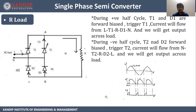Next topic is single phase semi-converter for R load, that is resistive load. This is the circuit diagram of a single phase semi-converter with resistive load. Here we have two thyristors T1 and T2, and two diodes D1 and D2. We are going to get output across the load R. We are giving single phase AC voltage from the input and we are going to get some pulsating DC across the output.